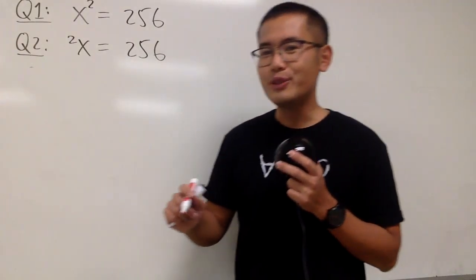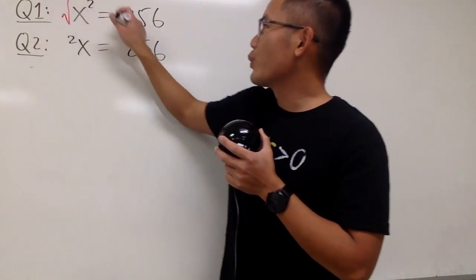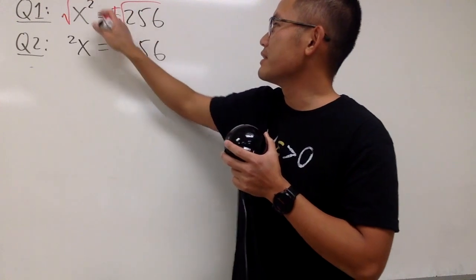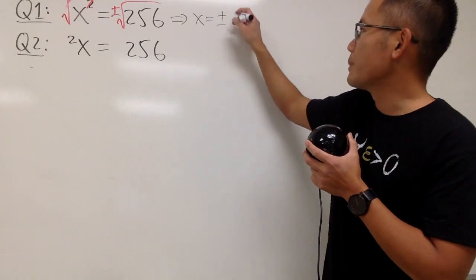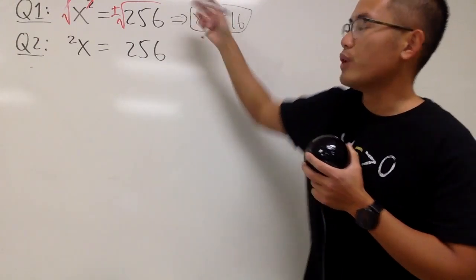Okay, as we all know, to solve the first equation, we can simply take the square root on both sides, which is plus or minus here. That and that will cancel, and we can get x by itself, and that's equal to plus or minus 16. We are done.